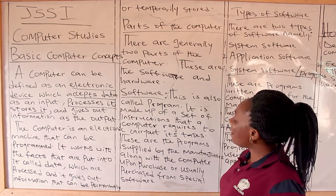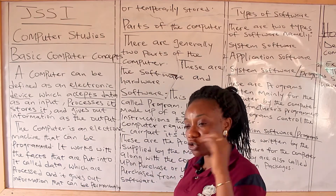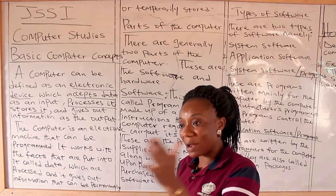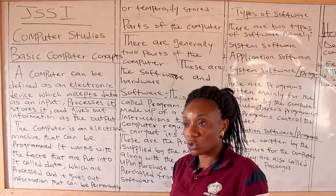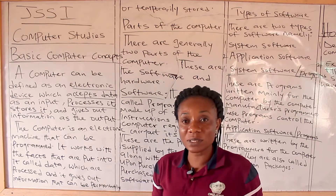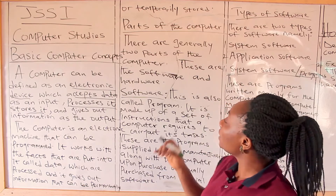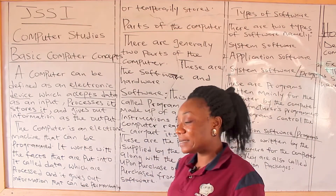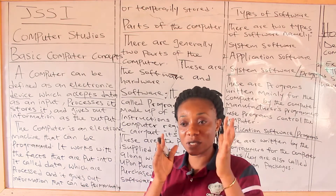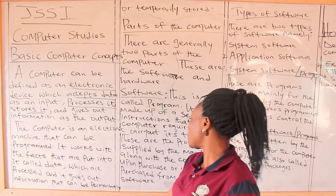There are also instructions given to the computer by the computer manufacturers and programmers. These help the computer users to carry out operations and actions to do their work. Without the computer being programmed by the computer programmers, you as the computer user would not be able to see the resources that help you carry out your tasks. So these instructions from manufacturers are also part of the software.